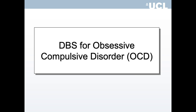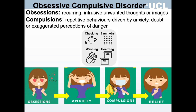Moving to the second part of this lecture on DBS for obsessive compulsive disorder: obsessions are recurring, intrusive, unwanted thoughts or images, and compulsions are repetitive behaviors driven by anxiety, doubt, or exaggerated perceptions of danger. Different subtypes of OCD include checking, washing, symmetry, hoarding, and obsessional primary slowness. In the classical model, obsessions give rise to anxiety, which results in compulsions being performed, relieving anxiety until the cycle repeats itself.